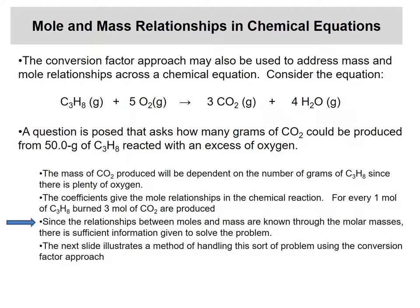That's why balancing equations is so important. Suppose we ask: how many grams of carbon dioxide can be produced from 50 grams of propane if we have an excess of oxygen? Excess oxygen means we have plenty — we don't need to worry about it limiting the reaction. The mass of CO₂ produced depends on how many grams of C₃H₈ we have. The coefficients give the mole relationships: one mole of C₃H₈ reacts with five moles of O₂ to give three moles of CO₂ and four moles of water.